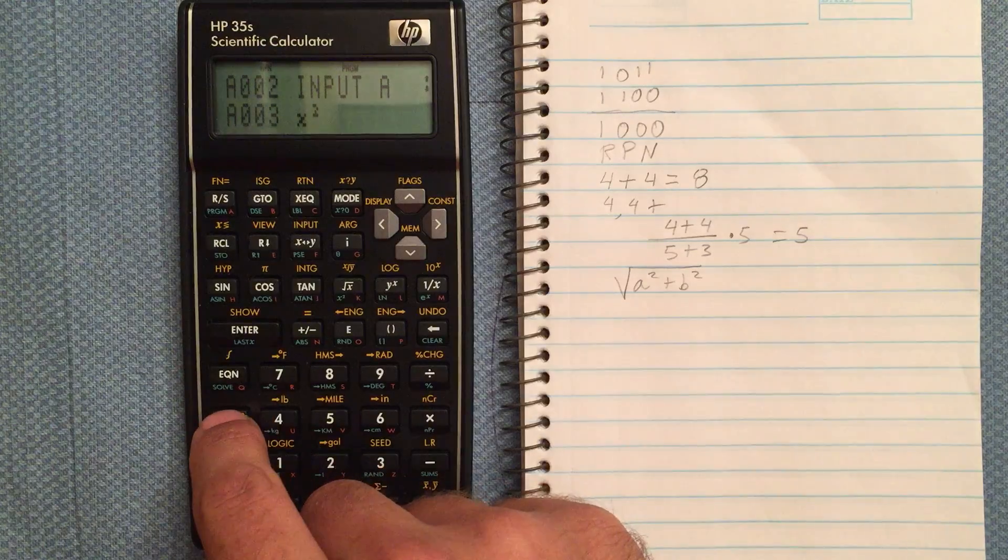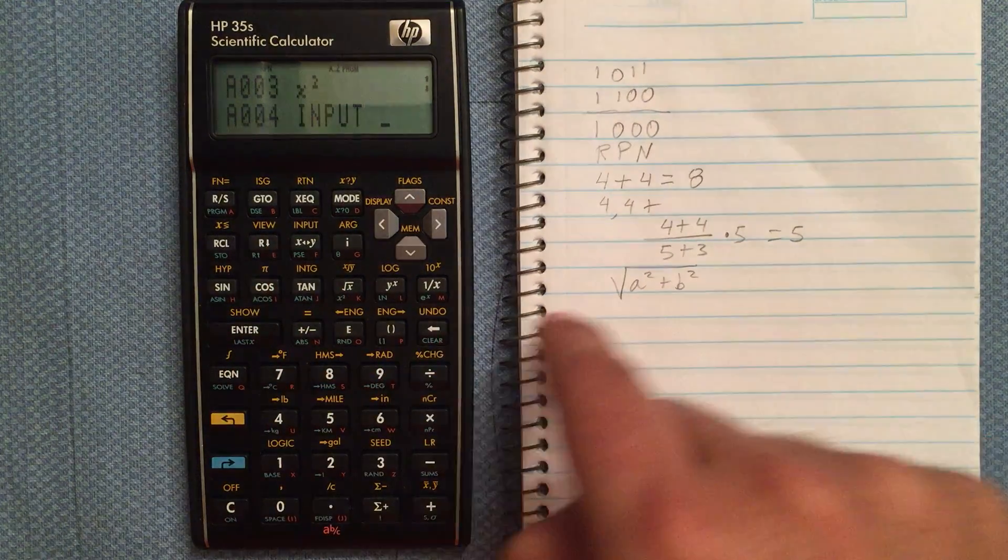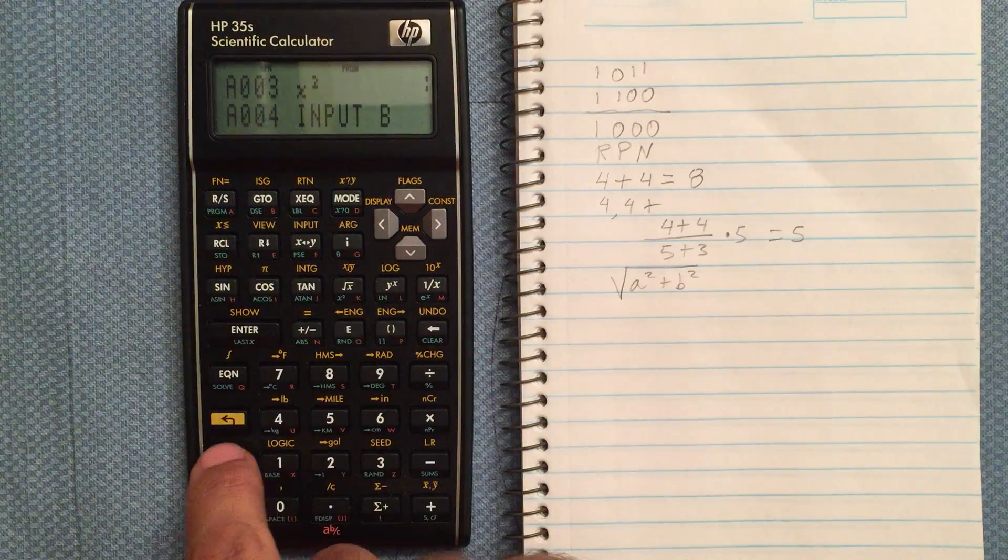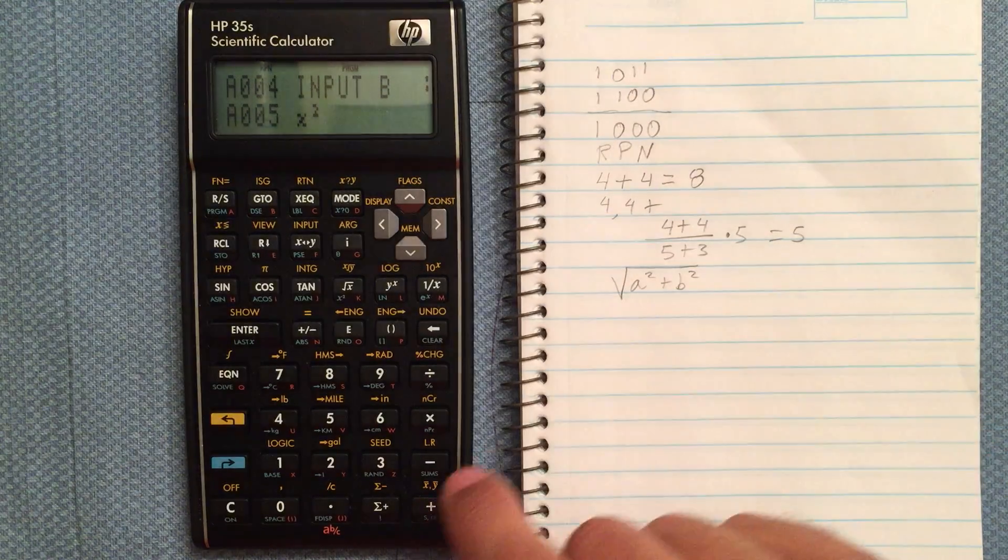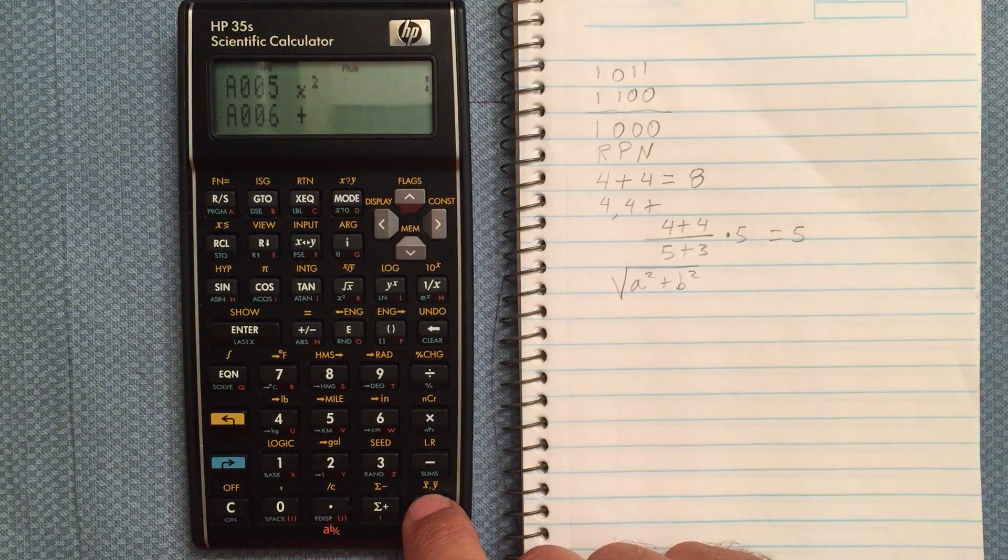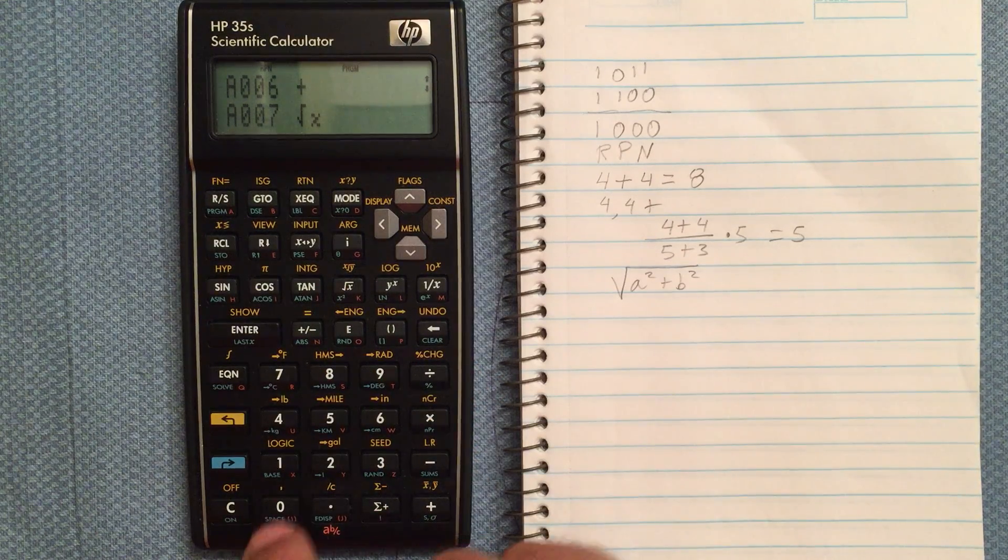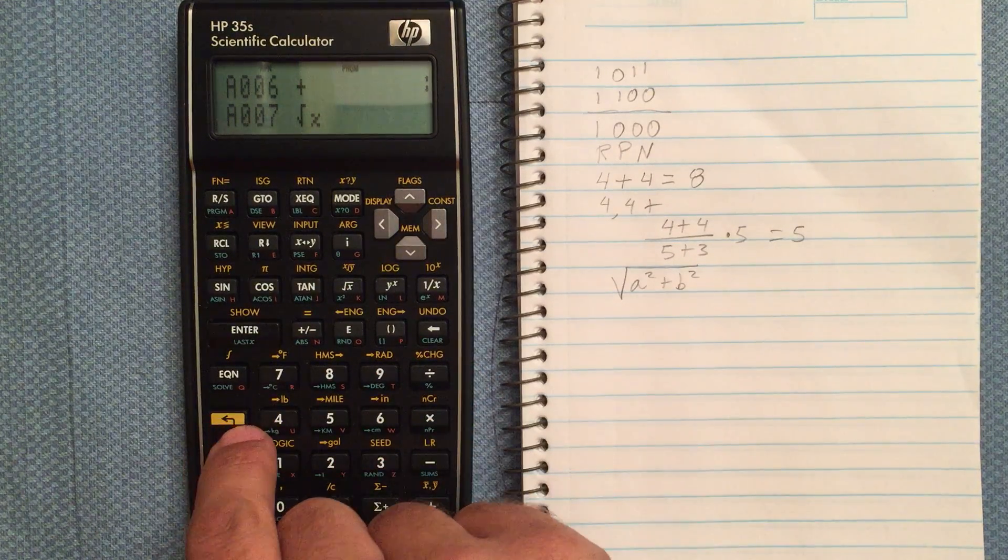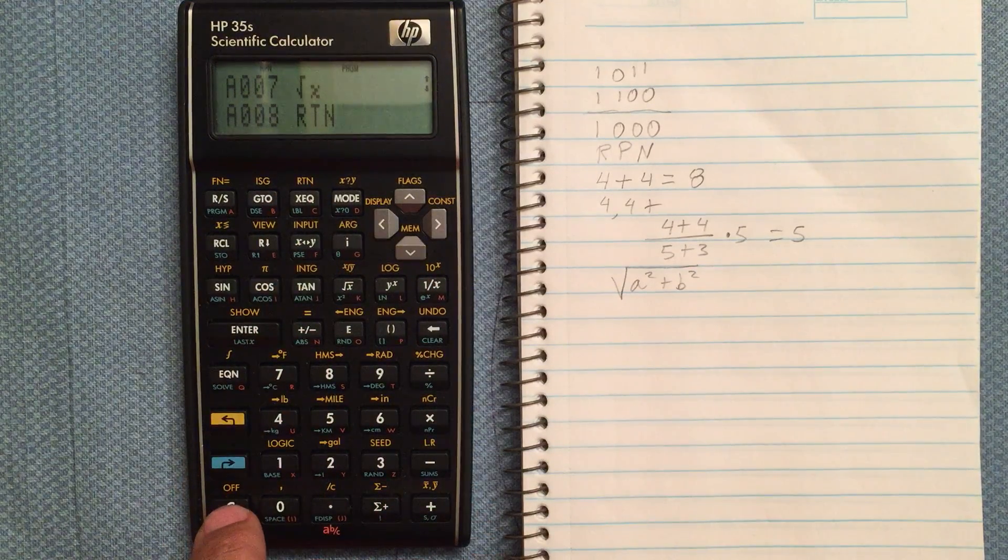Now let's input B and let's square that. Then we want to add those two together and then take the square root of the result. And now the last step is to gold shift and return.